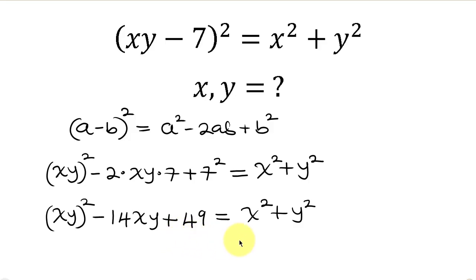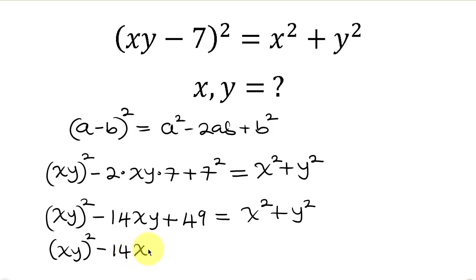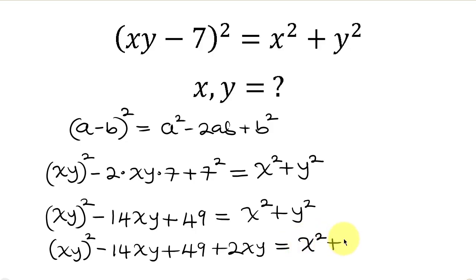Our next step will be to make the right-hand side a perfect square, and we can achieve that by adding 2xy to both sides. So on the left we have (xy)² - 14xy + 49, and I'll add 2xy. This is equal to the right-hand side x² + y², and I'm also going to add 2xy.